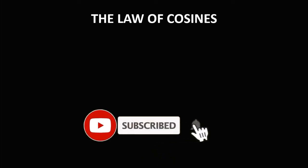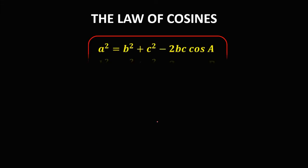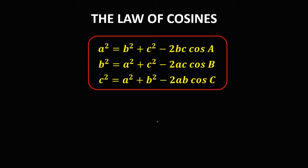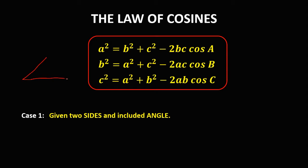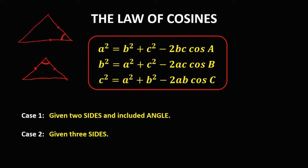Welcome to MathStorya. Today's topic is the law of cosines. These are the different formulas for the law of cosines, and we can only use this law of cosines in solving for an oblique triangle in two cases: Case 1 — given two sides and the included angle, and Case 2 — given three sides of an oblique triangle.